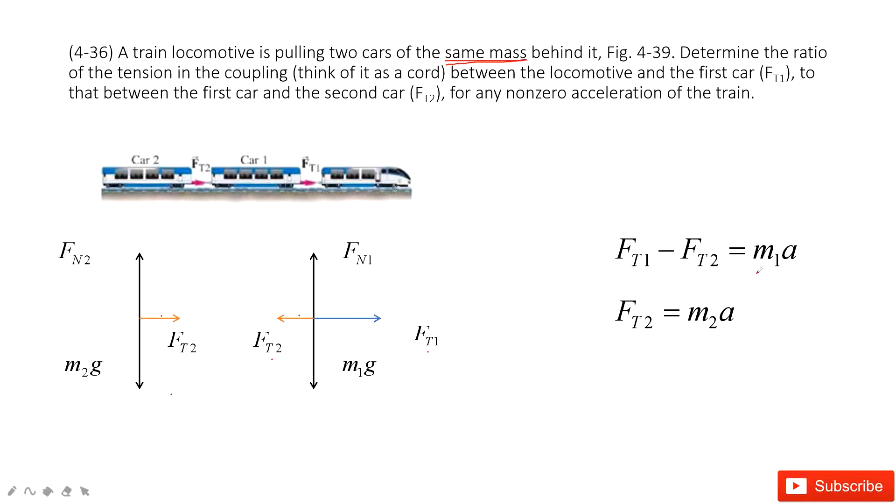Therefore, M1 equals M2. So in this one, we can get FT2 is mass times acceleration and FT1 is 2 times mass times acceleration. Therefore, FT1 is 2 times FT2.